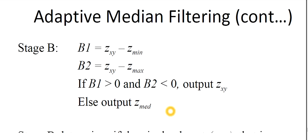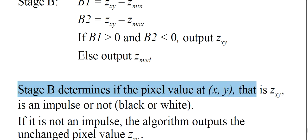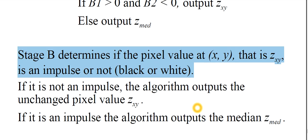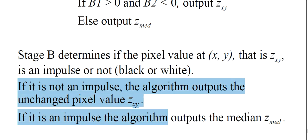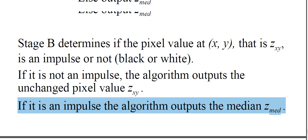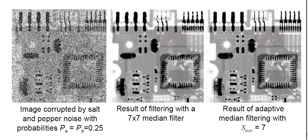Stage B determines whether the pixel value at (x, y), Z_xy, is an impulse or not. If it is not an impulse, the algorithm outputs the unchanged pixel value Z_xy. If it is an impulse, it outputs the median value Z_med. You can see that the image corrected by salt-and-pepper noise with probability 0.25 shows the 7×7 median filter result and the adaptive median filter result with S_max equal to 7 — and the adaptive output is noticeably better.